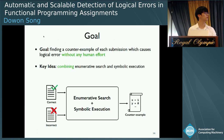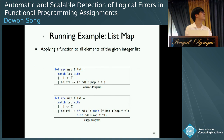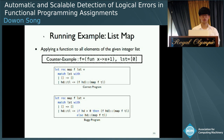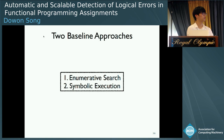Our goal is to find the counter-example of a submission without any human effort. To achieve this goal, we propose a novel technique which combines enumerative search and symbolic execution in a synergistic way. Now I want to explain it in more detail with a learning example. This example is to write a function map which applies the given function to each element of an integer list.